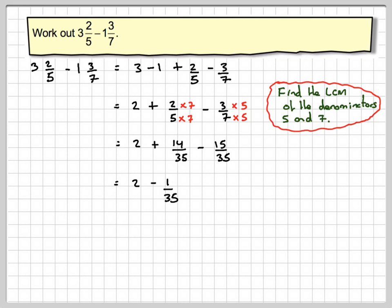Now we need to split the 2 up. We write this as 1 plus 1 minus 1 over 35.